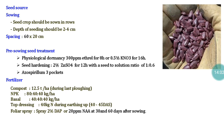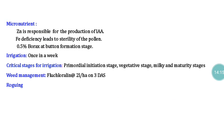For foliar spray, since sunflower is a seed crop, apply 2% DAP or 20 ppm naphthalene acetic acid twice — 30 days and 60 days after sowing. For micronutrition, zinc is important for IAA production. Iron deficiency also seriously affects pollen production and pollen viability, so adequate iron must be ensured. Protection of viable pollen is very critical for good seed set.